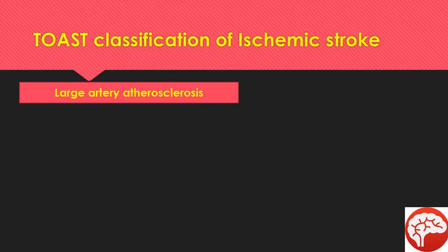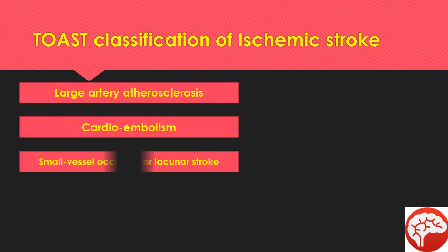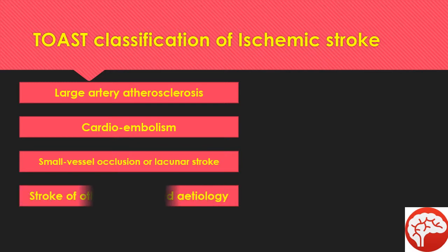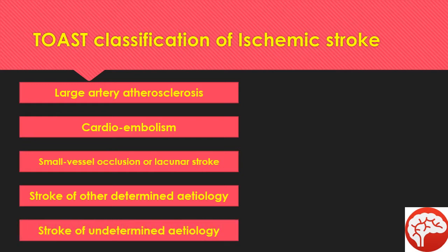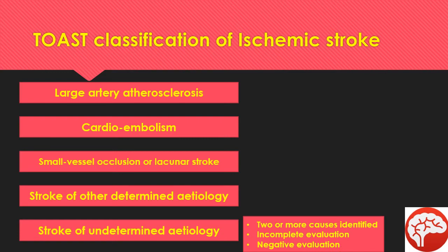The five TOAST subtypes are: Large Artery Atherosclerosis; Cardioembolism; Small Vessel Occlusion or Lacunar Stroke; Stroke of Other Determined Etiology; and Stroke of Undetermined Etiology — which includes two or more causes identified, incomplete evaluation, or negative evaluation.